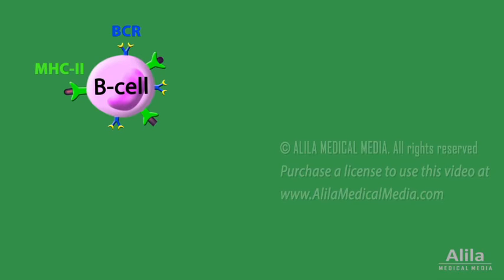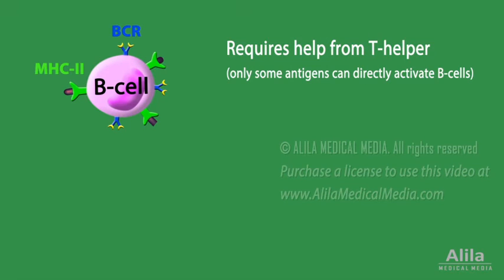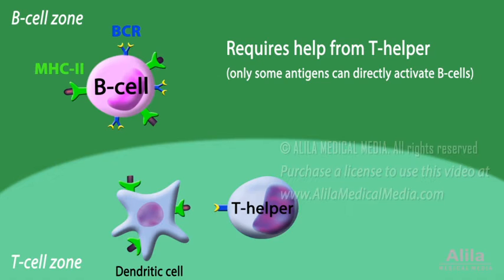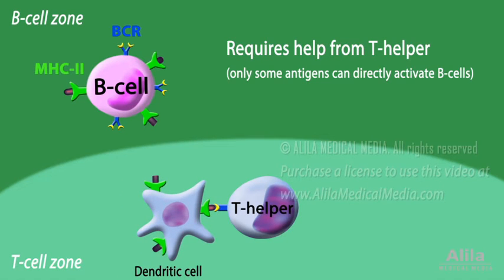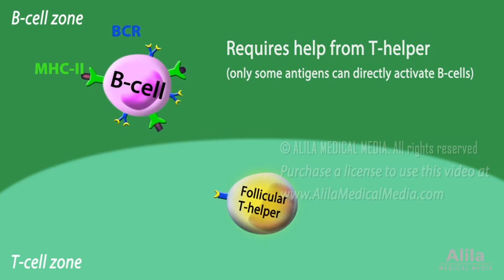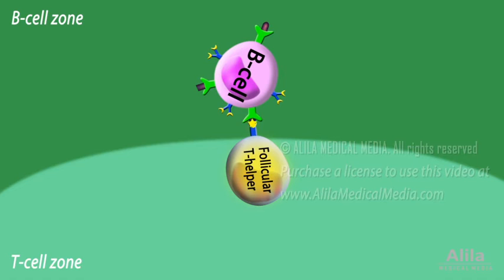In most cases, activation of antigen-primed B cells does not happen until they are stimulated by antigen-specific T helper cells. Nearby, in the T cell zone, T helper cells are activated by dendritic cells carrying antigens of the same pathogen, and become effector T helper cells. Some of these effector cells leave lymph nodes for the site of infection, while others — namely the follicular helper cells — migrate to T cell-B cell borders and bind to the antigens presented by B cells. This interaction triggers T cells to produce helper factors, which activate B cells.